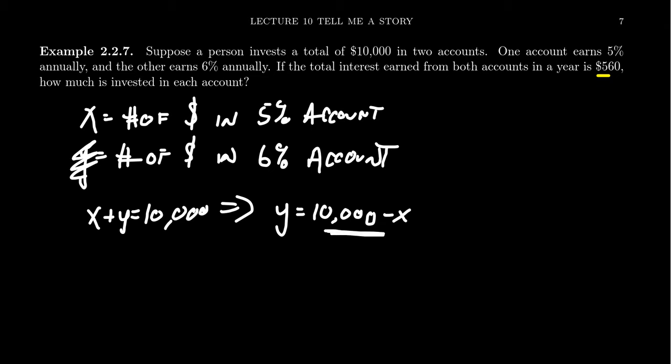So because of the simple interest formula, we know that interest is equal to principle times rate times time. And so here, X is that principle we placed in the 5% account. So we're going to have 5% times one year times however much we invested, which is X.